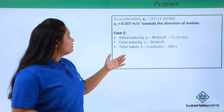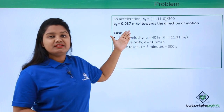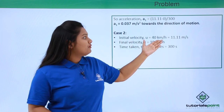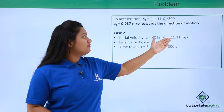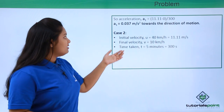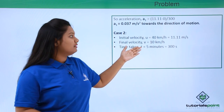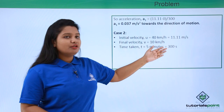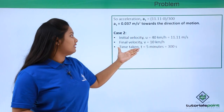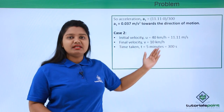Now let's move to Case 2. The initial velocity for Case 2 is the final velocity of Case 1, which is 40 kilometers per hour, already converted to 11.11 meters per second. The final velocity given by the question is 10 kilometers per hour, and this velocity change happens over a time duration of 5 minutes, which is again 300 seconds.